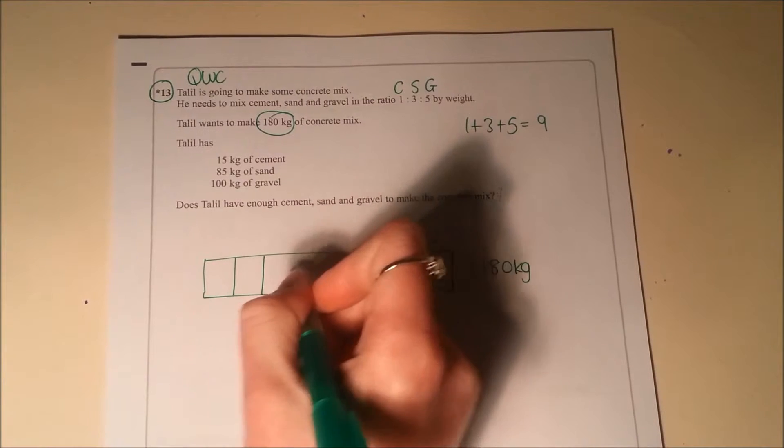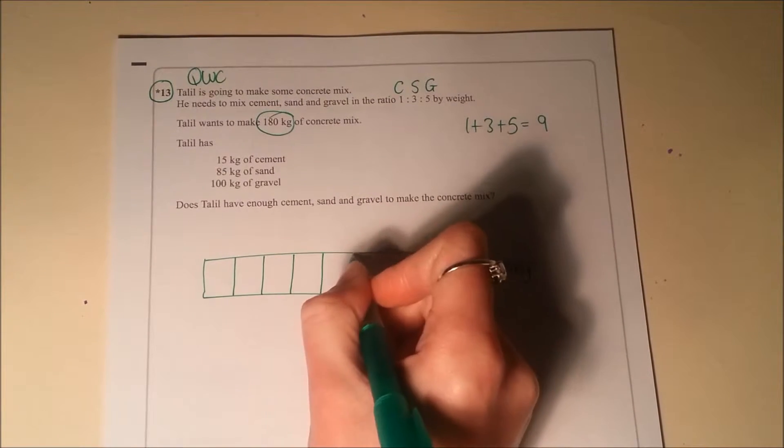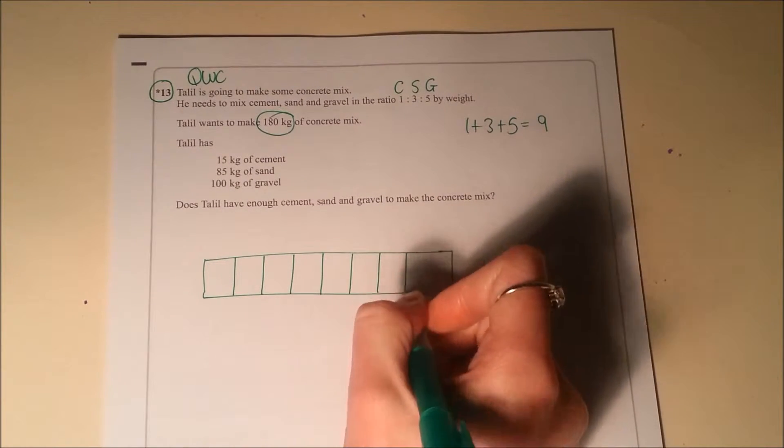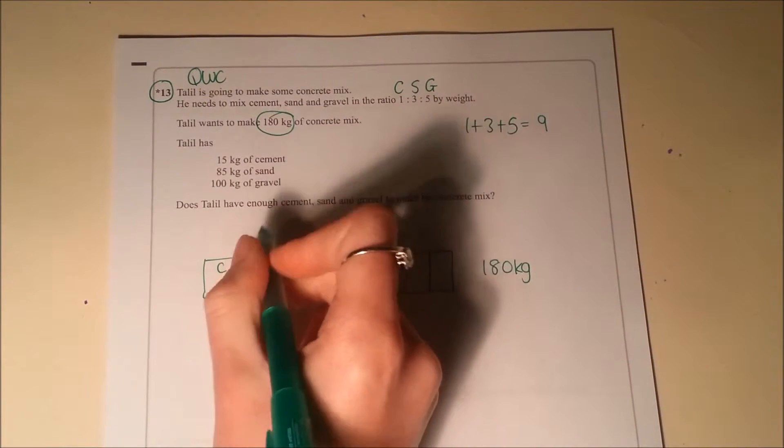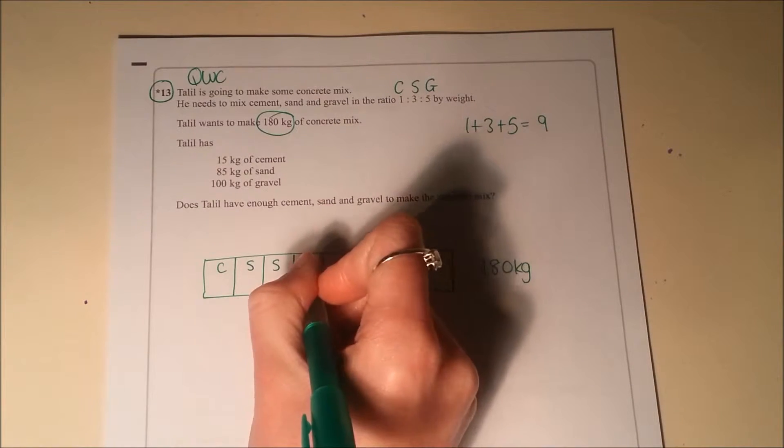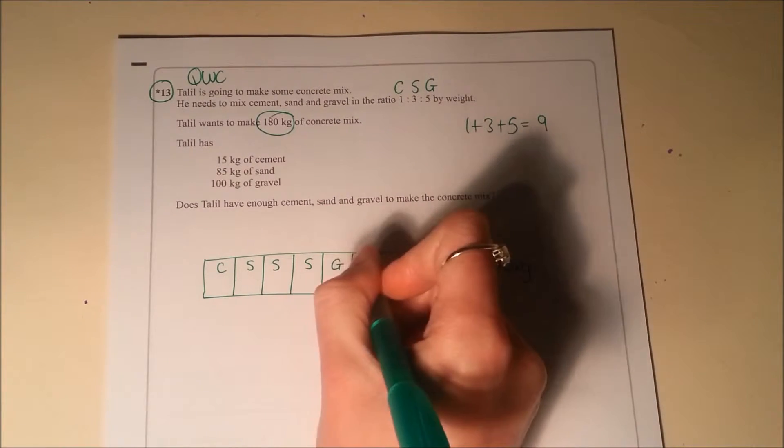So he's going to have 1, 2, 3, 4, 5, 6, 7, 8, 9 parts. He's going to have 1 cement, 3 sand and 5 gravel.